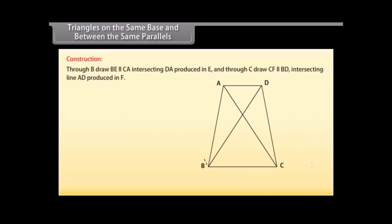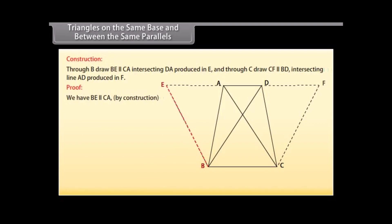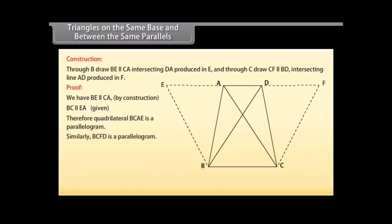Construction: Through B, draw BE parallel to CA intersecting DA produced in E, and through C, draw CF parallel to BD intersecting line AD produced in F. Proof: We have BE parallel to CA by construction and BC parallel to EA — this is given. Therefore, quadrilateral BCAE is a parallelogram. Similarly, BCFD is a parallelogram.